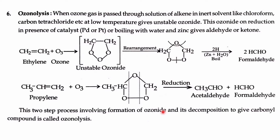The next reaction is ozonolysis. Ozone is O3. When we add ozone to ethylene or any alkene, it gives a compound called an ozonide. Three oxygens are added to the molecule, forming a ring having two carbons and three oxygens.